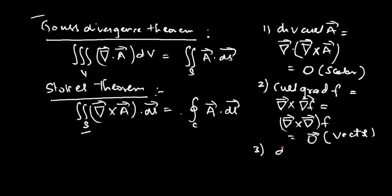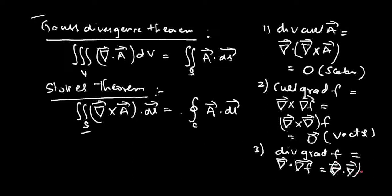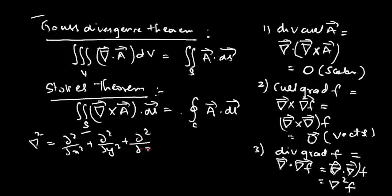The third identity is: div(grad f), written as del dot (del f), which equals the Laplacian operator del-squared applied to f. These three identities will be used throughout field theory: div(curl A) = 0 is used in magnetostatics, curl(grad f) = 0 in electrostatics, and div(grad f) — the Laplacian — is used in wave equations.